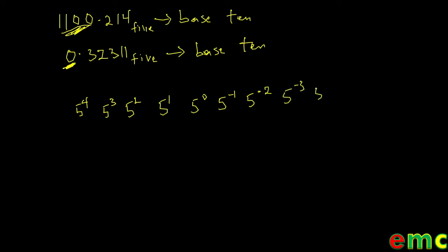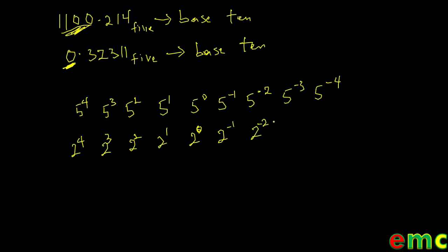If we are talking about base 2, the place values for the integer part are 2 raised to power 0, 2 raised to power 1, 2 to the power of 2, 2 raised to power 3, and 2 raised to power 4. For numbers that are after the decimal point, you have 2 raised to power minus 1, 2 to the power of minus 2, 2 to the power of minus 3, and 2 to the power of minus 4.